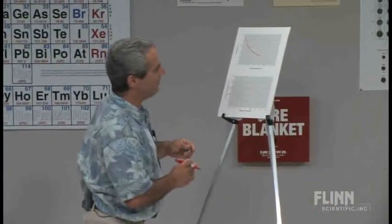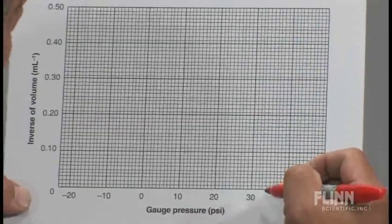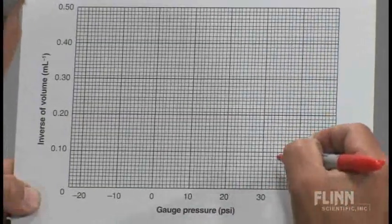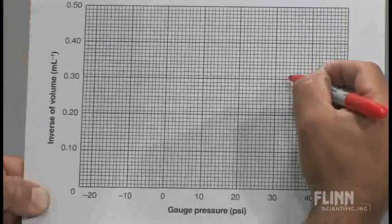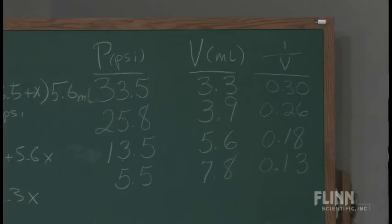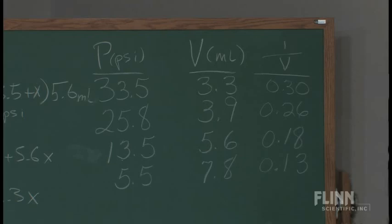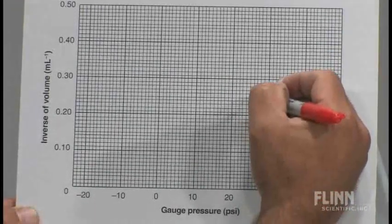Here we go, I'm going to graph those down here. We have the pressure of 33.5 and up to 0.30, so I got to make sure I get this real close here. 33.5 up to 0.30. And we got a pressure of 25.8, that's right here, up to 0.26.